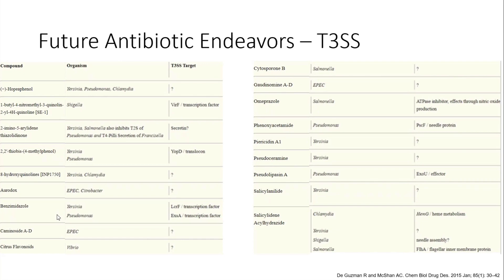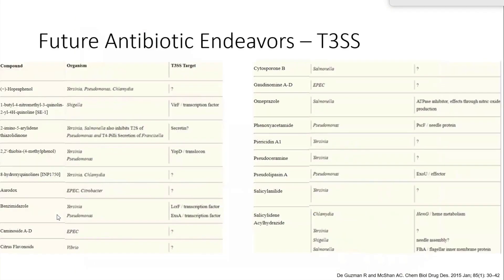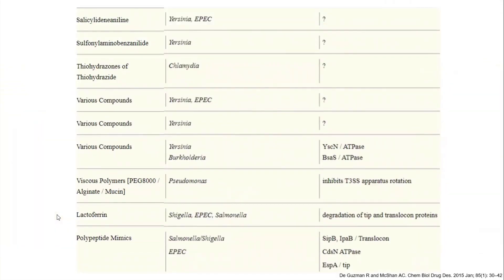Several future antibiotic agents are targeted against the type 3 secretion system, applicable to Pseudomonas, Shigella, and Salmonella. Some experimental molecules and even old non-antibiotic molecules — such as omeprazole being investigated for Salmonella — are being explored for specifically targeting the type 3 secretion system. It will take some time before we see clinical benefit, but hopefully this will be realized in the near future.